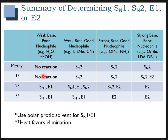The table covers the methyl situation first: methyl substrates, regardless of what you're using, can only do an SN2 mechanism. A poor nucleophile won't react because a methyl cation is not stable at all, so you have to do SN2. Same thing with primary substrates — a poor nucleophile implies SN1 conditions, and that really can't happen with a primary substrate, so you're going to have SN2.